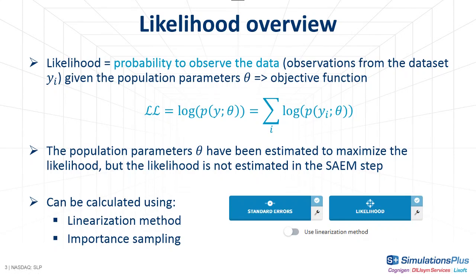If you have watched our video on the estimation of the population parameters with SAEM, you saw that SAEM does not need to calculate the likelihood to find the population parameters that maximize it. This is why the likelihood is calculated as a separate task. In Monolix, there are two methods to calculate the likelihood, either via linearization, when the toggle use linearization method is on, or via importance sampling.